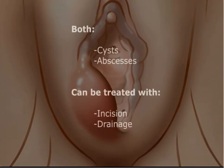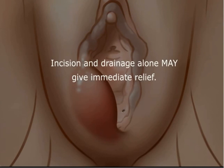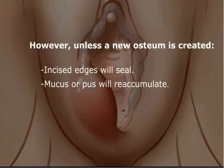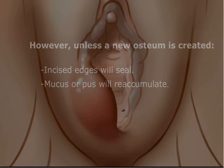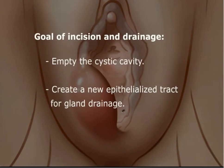Both symptomatic Bartholin gland duct cyst and Bartholin gland duct abscess are treated with incision and drainage. Incision and drainage alone may give immediate relief. However, unless a new duct ostium is created, the incised edges following incision and drainage will seal and mucus or pus will reaccumulate. Thus, the goal of Bartholin gland duct incision and drainage is to empty the cystic cavity and create a new epithelialized tract for gland drainage.